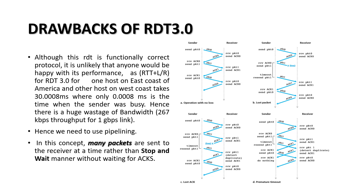Welcome again to computer networking classes. In the previous video we had discussed about RDT 2.1, 2.2, and 3.0. In this video we will be talking about the drawbacks of RDT 3.0 and some pipelining techniques.